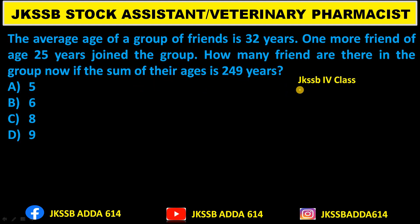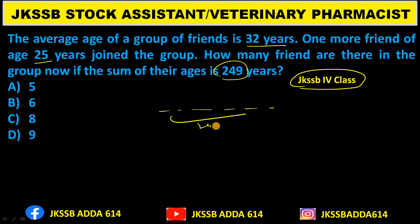Homework question from JKSSB 4th Class: The average age of a group of friends is 32 years. One more friend aged 25 joined the group. If the sum of their ages is 249, how many friends are there in the group? You can solve by putting option values (5, 6, 8, 9) or by using algebra with variable x.